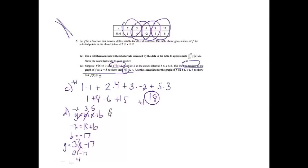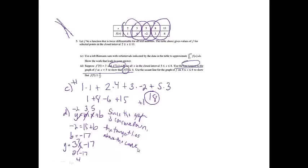Since the graph is concave down, the tangent line lies above the curve. So f of 7 has to be less than or equal to whatever value I came up with. In this case I came up with 4, and that's what they wanted me to show. So that's my explanation for the first sentence.